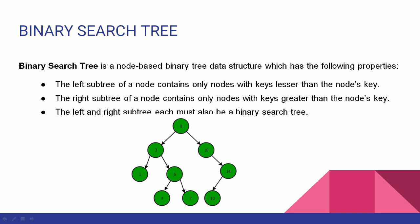This is a binary tree which has the following properties. The left subtree of a node contains only nodes with key values lesser than the node's value. The right subtree of a node contains only nodes with values greater than the node's value. And the left and right subtrees must also each be a BST.